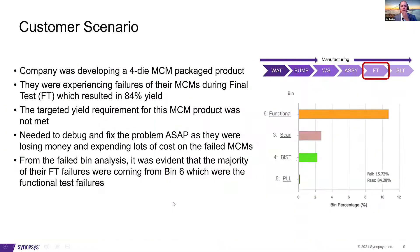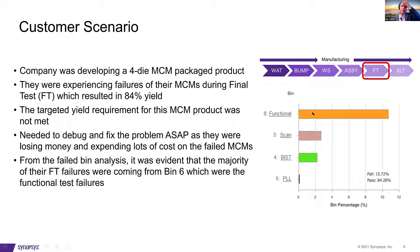The example scenario shows a customer with a 4-die MCM package encountering issues in final test. Looking at the different fail bins, functional test is the predominant area of failure. The color codes are important — especially the orange, which represents bin six failures and is what we'll be tracing through, as it accounts for the majority of the failed tests.